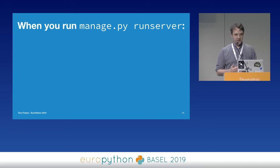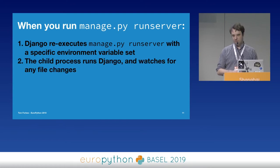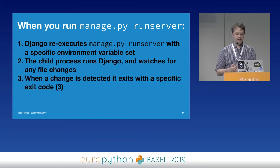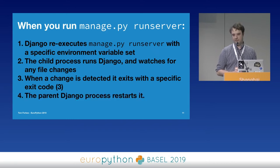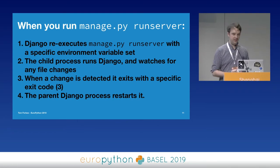This is how the Django auto-reloader works. When you run manage.py runserver, Django re-executes manage.py runserver again with a specific environment variable set. The child process actually runs Django — imports all your modules and watches for file changes. When a change is detected, it exits with exit code 3, and the parent Django process restarts it. If it exits with another code, it's an unexpected error. It's a simple loop: a supervisor process that restarts the child process when it exits.